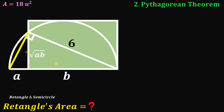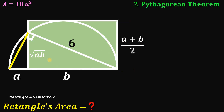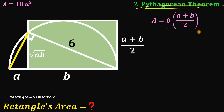Our goal is to find the area of this rectangle. The height of the rectangle is the radius of this semicircle, which is (a + b) divided by 2. So the area of the rectangle is the base b multiplied by (a + b) all over 2. Using the Pythagorean theorem in this right triangle, we set up the equation.